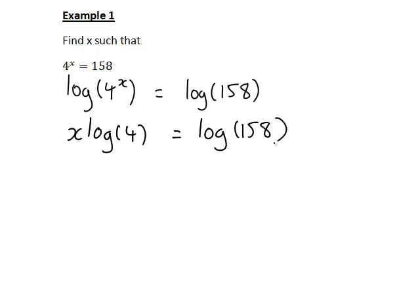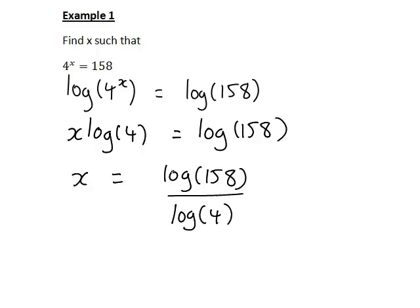Now dividing both sides by log 4 to cancel it from the left and make x the subject, we get x equal to log 158 divided by log 4. Using the log button on the calculator, to 4 decimal places, log of 158 is 2.1987, log of 4 is 0.6021, though it's good to keep it as accurate as possible until the final answer.